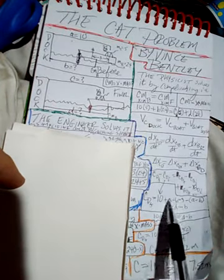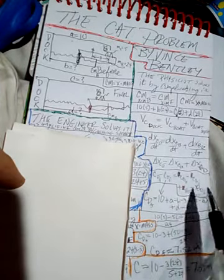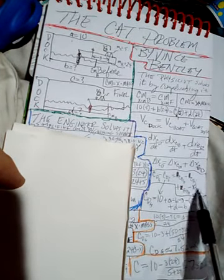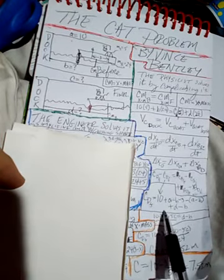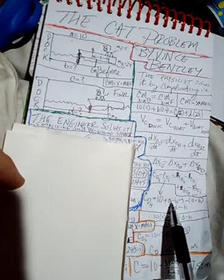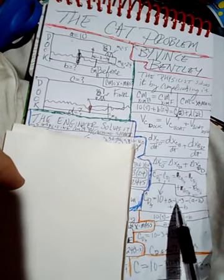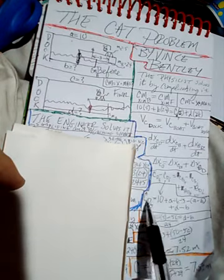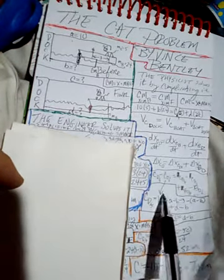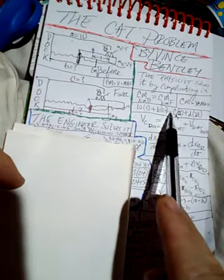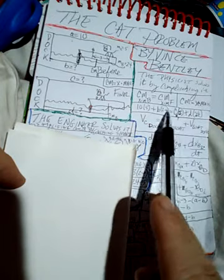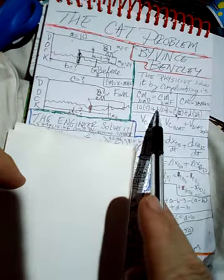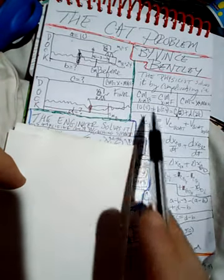The boat's initial distance from the dock was b, and its final distance is d. Plugging everything in gives one equation with unknowns b, c, and d — three variables, one equation. So the physicist goes back to the center of mass equation. Rearranging that equation, he isolates (d−b), which conveniently appears in the relative motion equation as well.